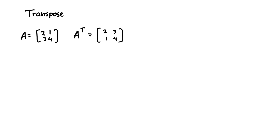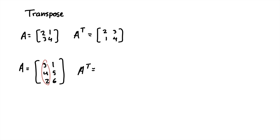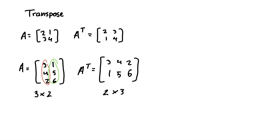It might be hard to see the change with such a small square matrix, so we can make it a little bigger to make it more obvious. We can expand this as a two by three matrix. If we take A transpose of this, column one will become row one of A transpose, so we'll have three, four, two as the first row, and then one, five, six as the second row. So we went from a three by two matrix to a two by three matrix because the rows and columns change places.